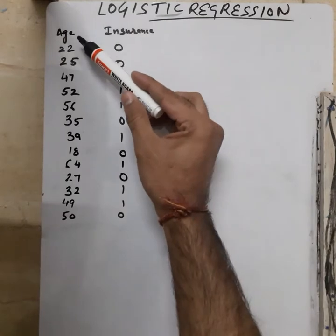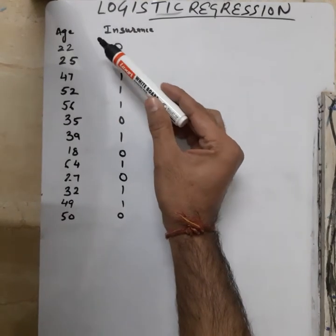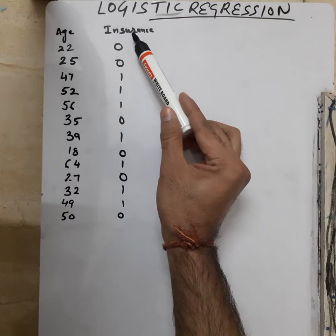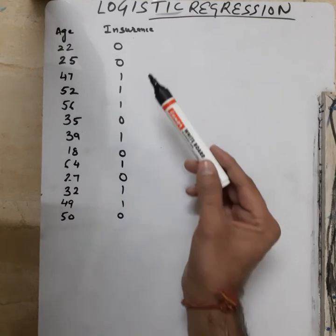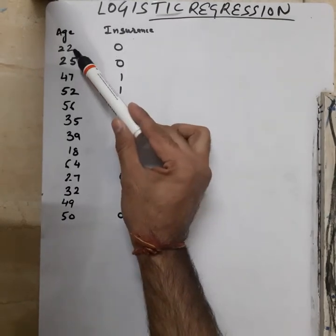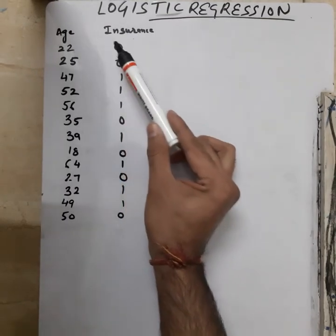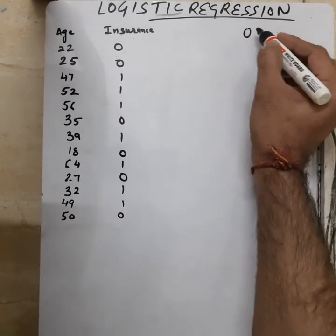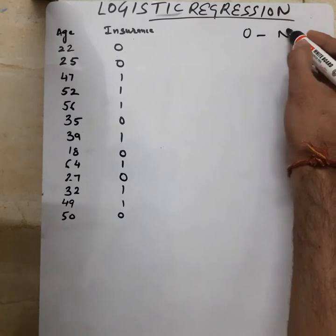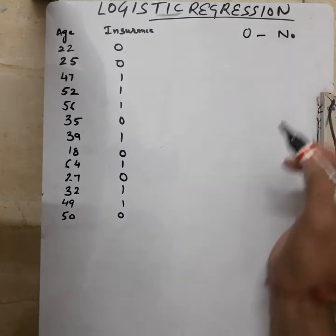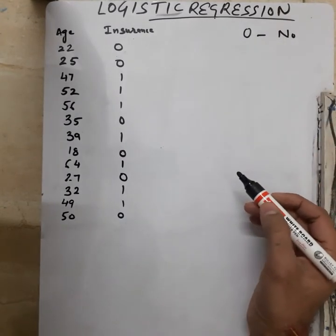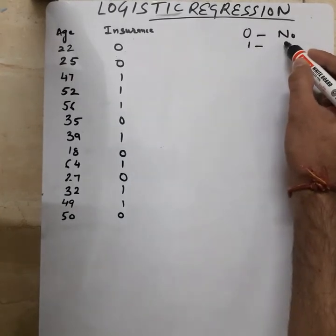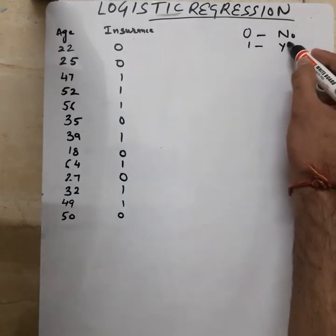Assume that we have been given some data. I have taken a few values for an age column and there is one more column called insurance. For age 22, insurance is zero — zero represents that the person has not bought any insurance, and one means the person has bought the insurance.